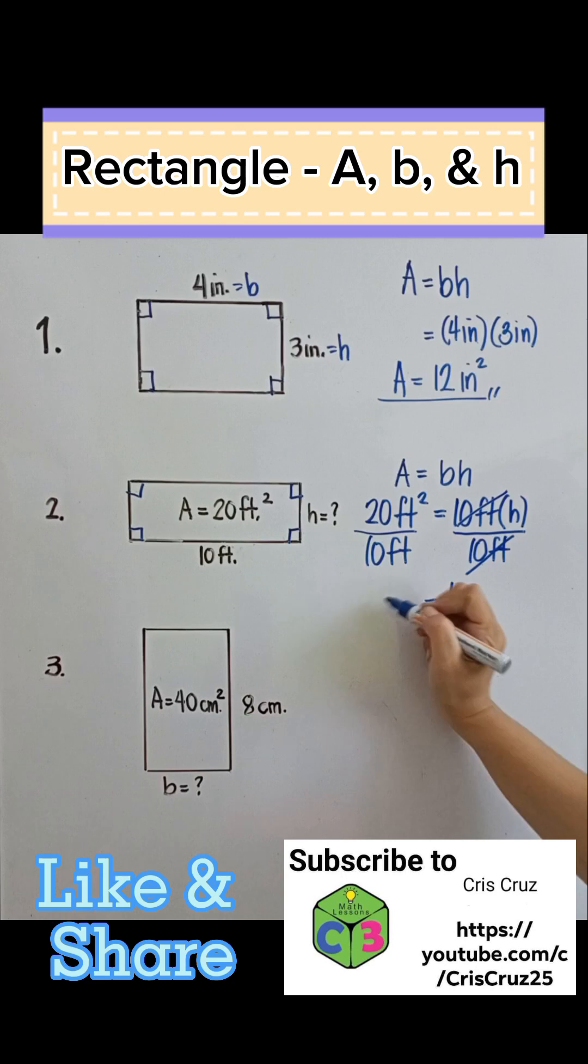20 divided by 10 is 2. Feet squared will be cancelled out with feet here, leaving 1 feet. So you have 2 feet equals H. Our height is 2 feet.